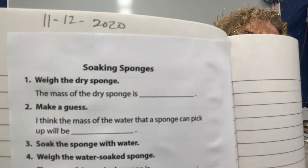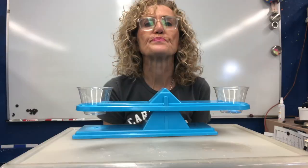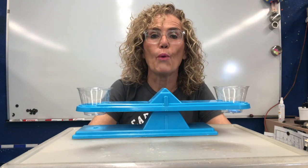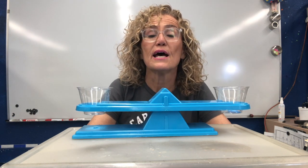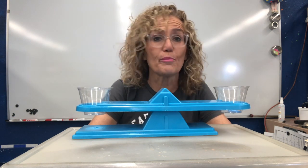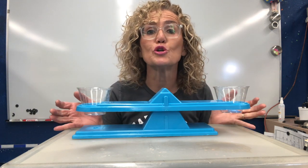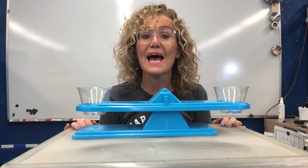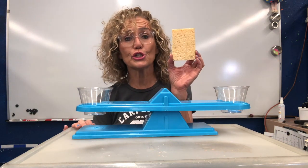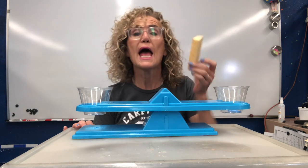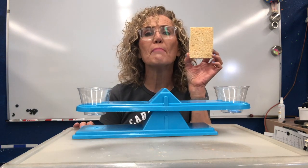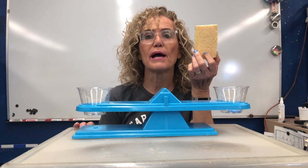Boys and girls, please get out your science notebook and get to the soaking sponges page. I'm going to do an experiment, and as I go along I want you to fill out this page. I just talked about how wax paper is waterproof and paper towels are absorbent. Those materials are designed to be like that so we can use them for specific tasks. A sponge is designed to be absorbent, and my question is: how much water can a sponge absorb?